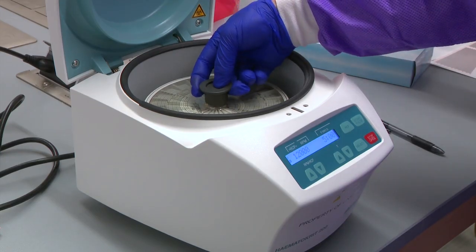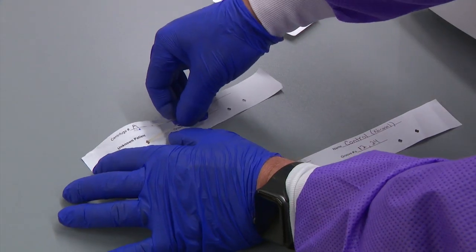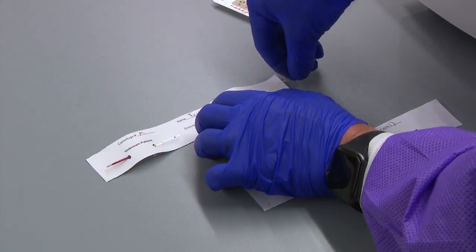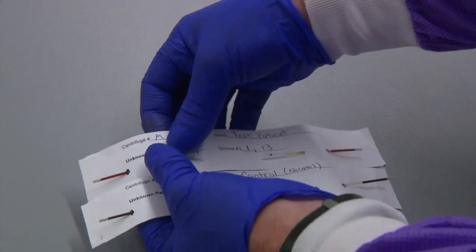After centrifugation is finished, remove the micro hematocrit tubes from the centrifuge and place them back in the micro hematocrit tube holders in the correct holes. Transfer the sheet back to your workstation, making sure to hold the tubes and sheet.